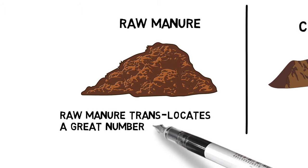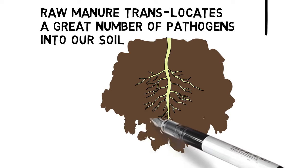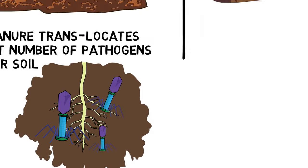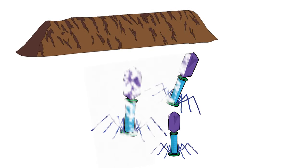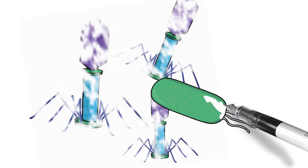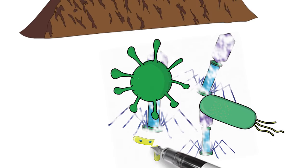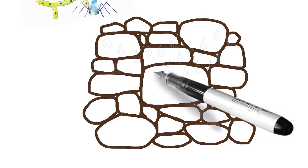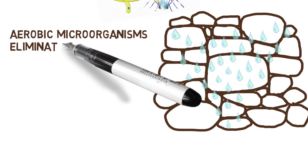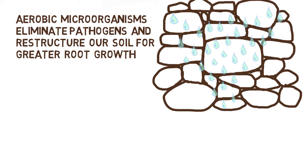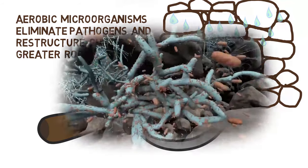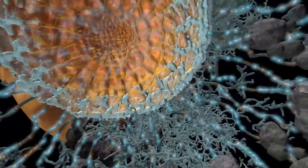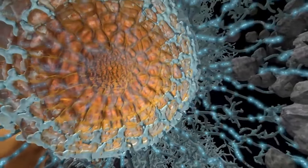Raw manure translocates a great number of anaerobic pathogens and pathogenic compounds into our soil. Composted manure eliminates the presence of pathogens, and the aerobic microorganisms from the composting process have the ability to restructure soil aggregates — taking compacted soils and creating spaces for air and water, reducing compaction so that we have far greater root growth. The beneficial microorganisms also set up a nutritional network and provide minerals in the proper form for plant uptake.